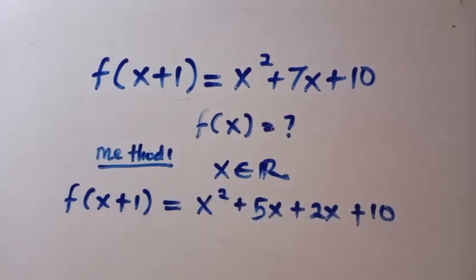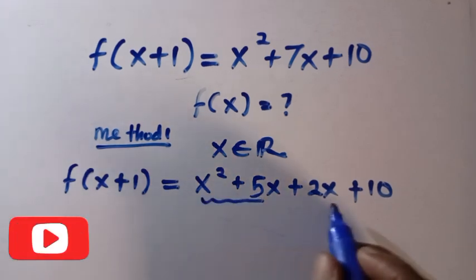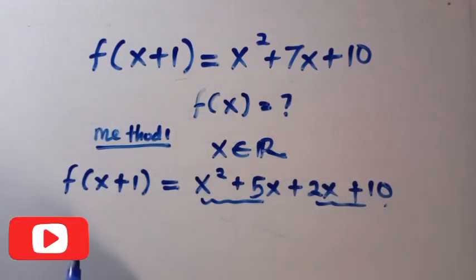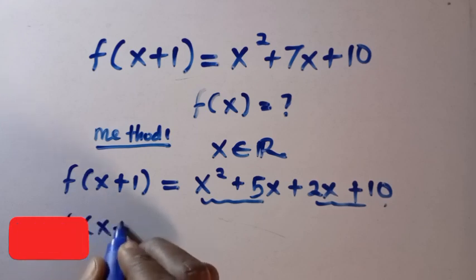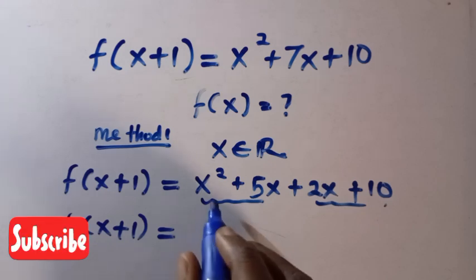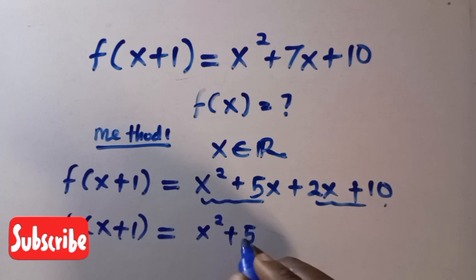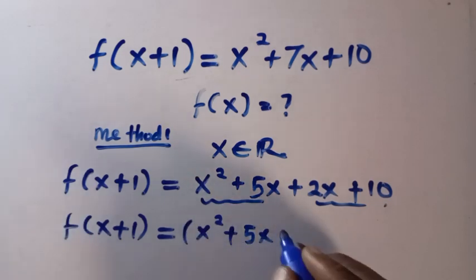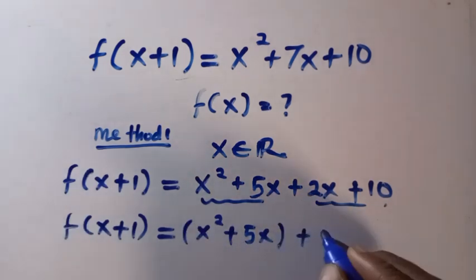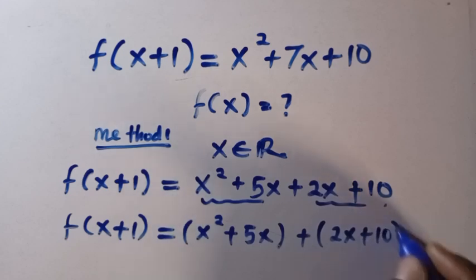And from here, we can easily group this. So we group this together, and we also group this together. Then we have f of x plus 1 equals, so when we group this, we put it in brackets as x squared plus 5x, and also 2x plus 10.